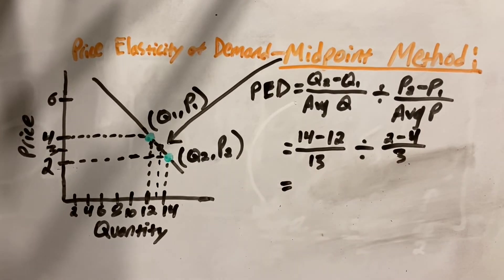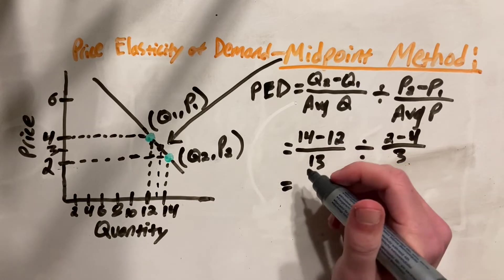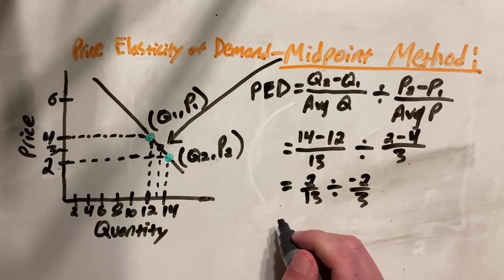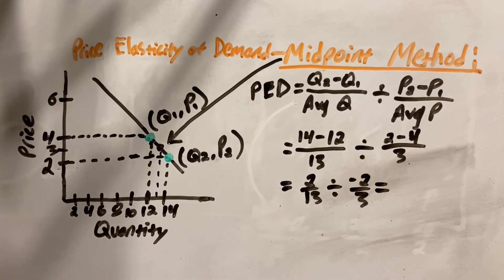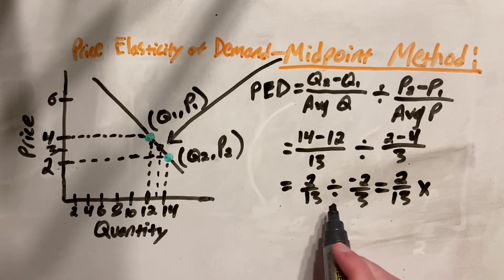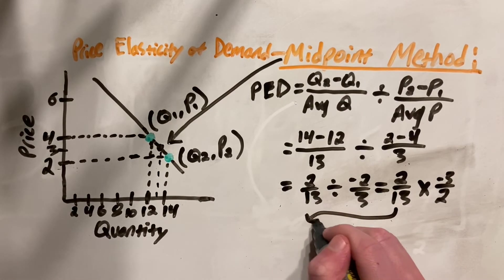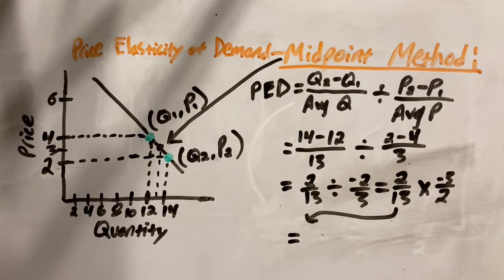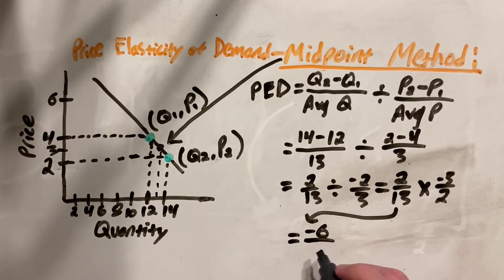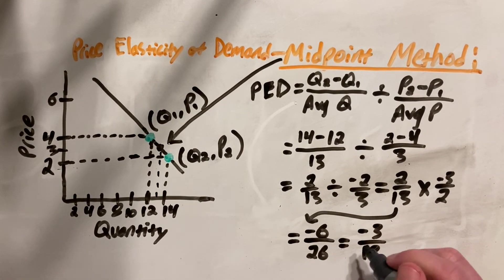And now we have our equation and it's simply a matter of solving it. 14 minus 12 is 2 over 13 divided by 2 minus 4, which is negative 2 over 3. And now we simply have to solve this division problem. If you remember from school, when you're solving a division problem, keep the first part of your problem the same, then change the division sign to a multiplication sign. And then finally, find the reciprocal of the second part of the equation, which just means you flip the fraction. Negative 2 over 3 becomes negative 3 over 2. And then we have 2 times negative 3, which is negative 6, over 13 times 2, which is 26. We can simplify that to negative 3 over 13.